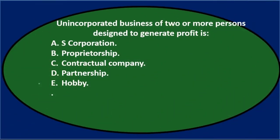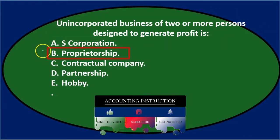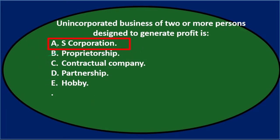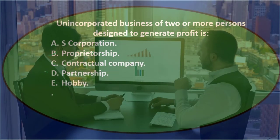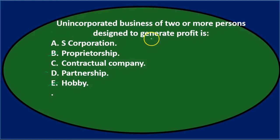The unincorporated business of two or more persons designed to generate profit — a proprietorship is one person, so we can eliminate that. S corporation might be more abstract to us. C says contractual agreement. D says partnership, which is probably the one we're talking about since we're covering partnerships in this course. E says a hobby, and it's clearly a business designed to generate profit, so that's eliminated.